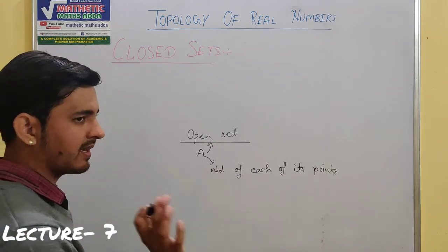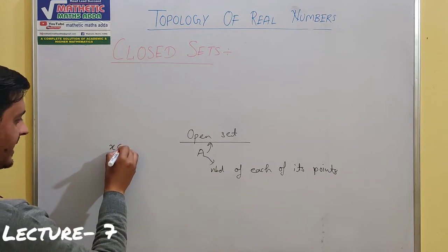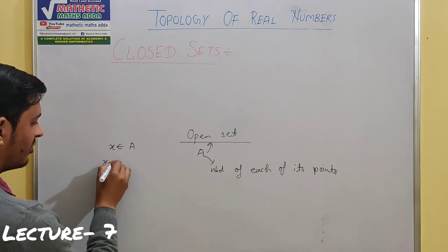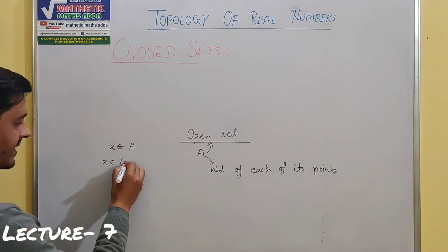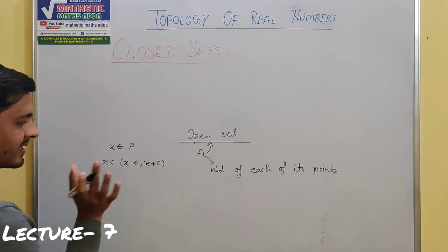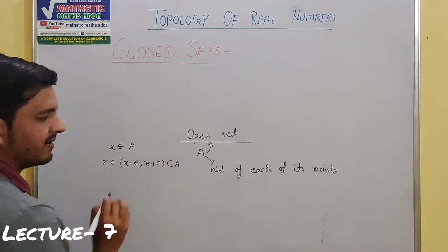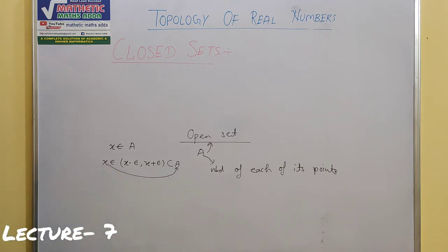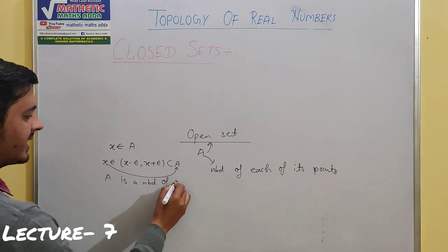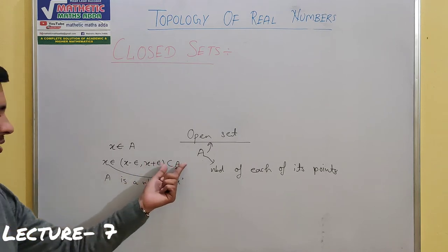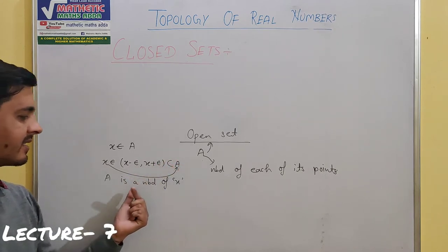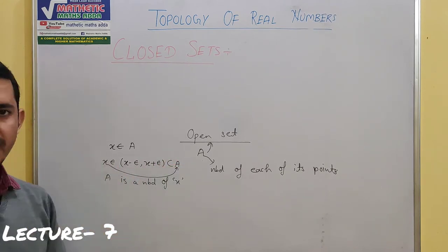Let's take a general example. Suppose we take an element X from A. Now we find a small Open Interval containing X: (X − ε, X + ε). If this Open Interval containing X becomes a subset of A, then we say that A is a neighborhood of X.